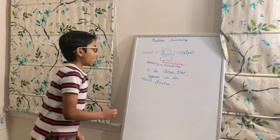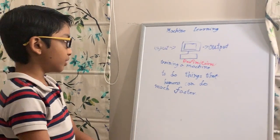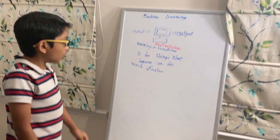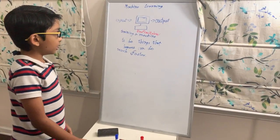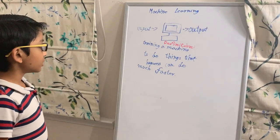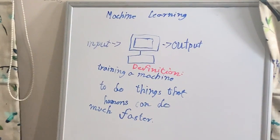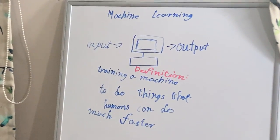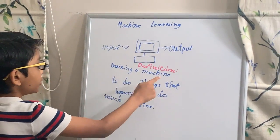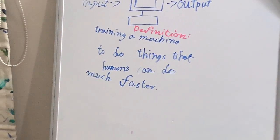Whenever we put input into a machine, it gives an output as a result. Now that you understand about input and output, the understanding of machine learning is pretty much training the machine to do things that humans can do much faster.